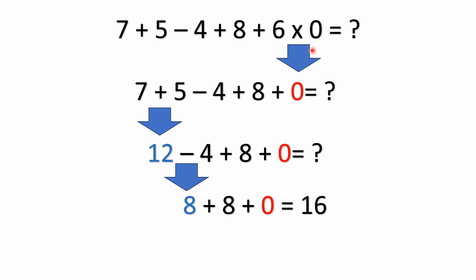So we mentioned that multiplication comes first, so 6 times 0 equals 0, and we're left with 7 plus 5 minus 4 plus 8 plus 0. Then we do the addition and subtraction — it really doesn't matter what order you do them because addition and subtraction have equal precedence. I could do minus 4 plus 8 is 4, and 4 plus 5 is 9, and 9 plus 7 is 16 — I could work this in any order. But we're just going to go left to right.